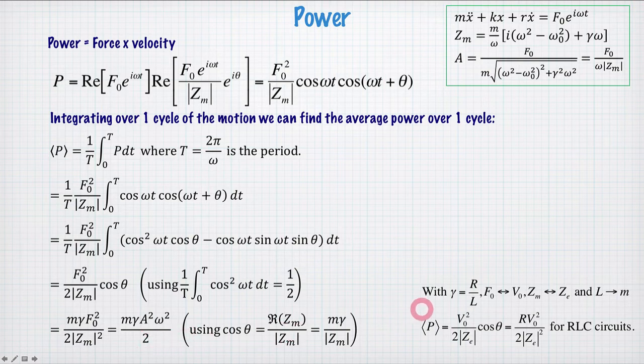This is for mechanical systems. If you want to have an electrical system, then we can use the substitutions that we used previously, and then find the power dissipated by an electrical circuit is given by this, within the angle of the impedance, or getting rid of the angle of the impedance given by this.